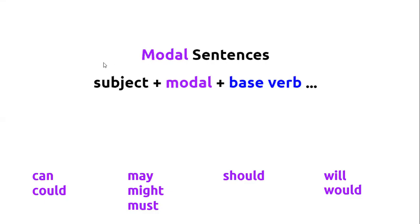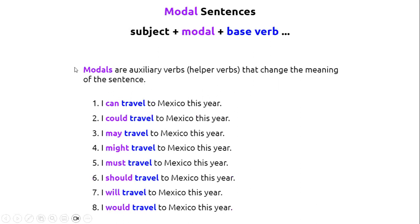Modal sentences: subject, modal, base verb. Modal examples: can, could, may, might, must, should, will, would. Modals are auxiliary verbs that change the meaning of the sentence. These sentences are very similar — they're exactly the same except for the modal verb.